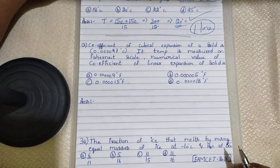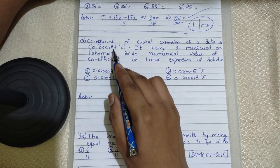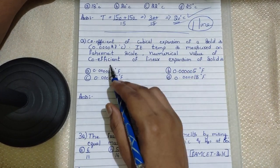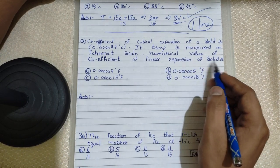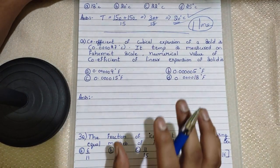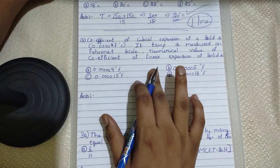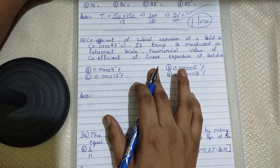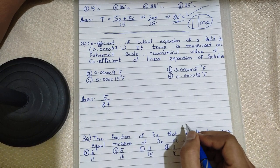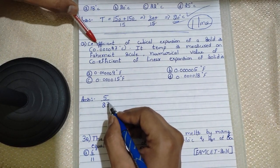The coefficient of cubical expansion of a solid is 0.00027 per degree Celsius. Its temperature is measured on the Fahrenheit scale. We need the numerical value of the coefficient of linear expansion of the solid. Whenever you come across this type of question, apply my shortcut magic number — my cheat code: 5 by 27.